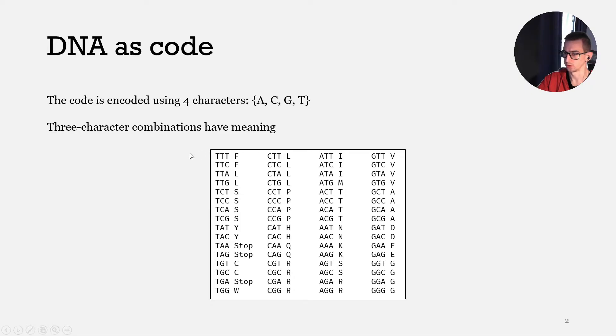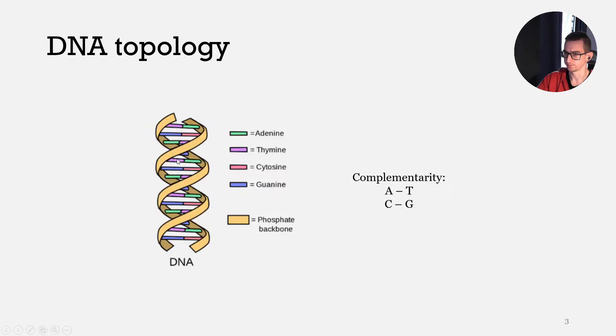Here is a table of what each triplet encodes. The only thing that is important for us from DNA is that it can be presented in the form of two strands, and DNA has a property of complementarity. That means that each symbol in one strand has a corresponding symbol in the other strand.